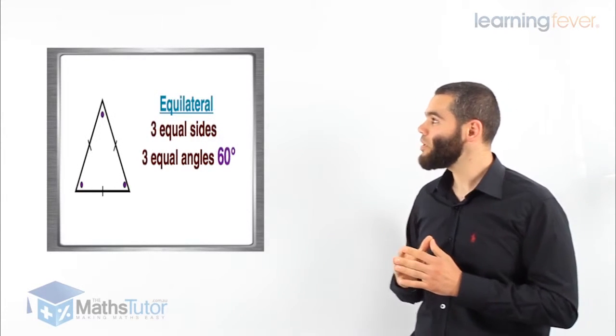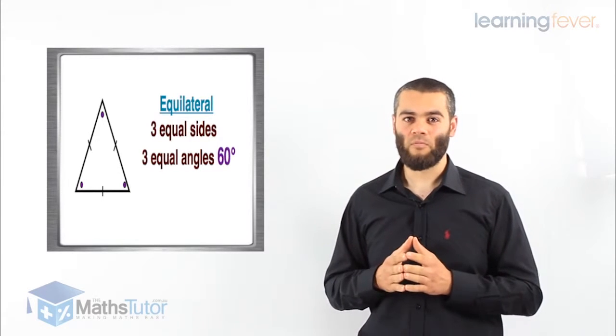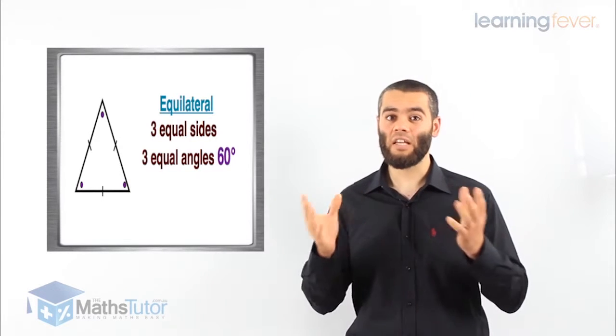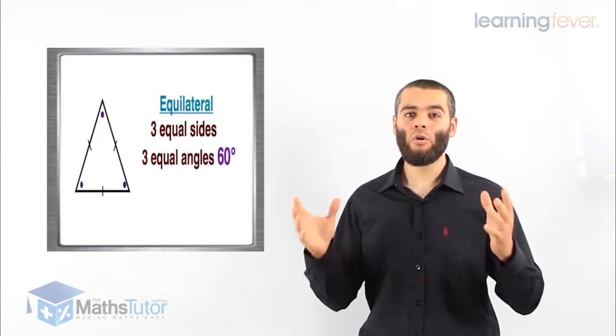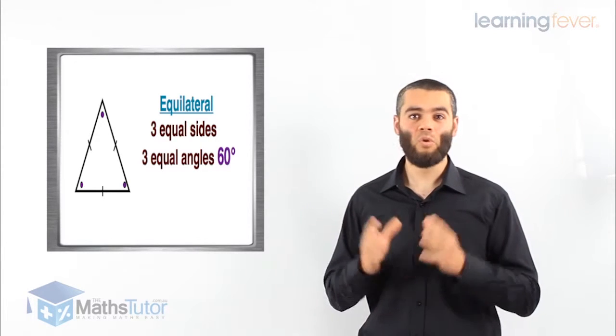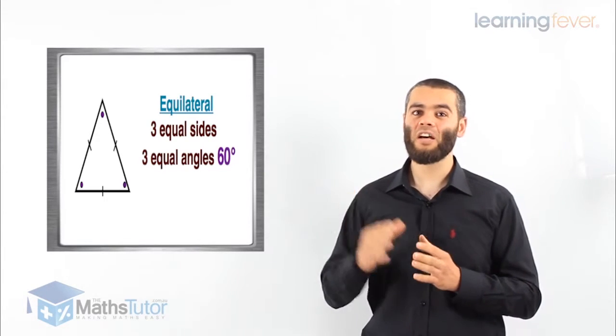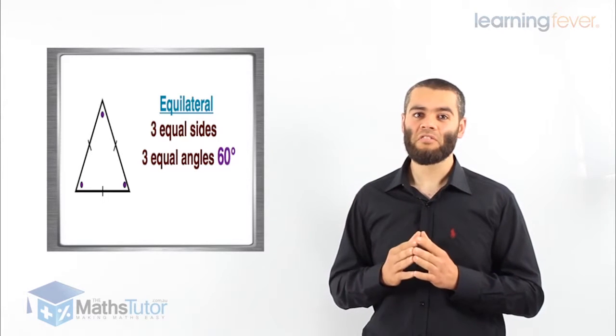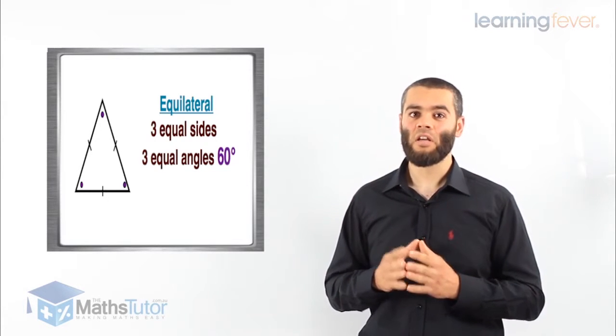Then we have what we know as the equilateral triangle. As the name suggests, all the sides are equal. So if one side was seven, all the other sides are going to be seven.